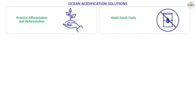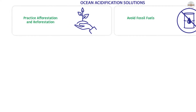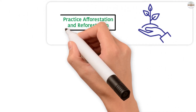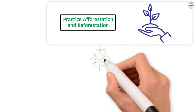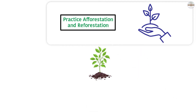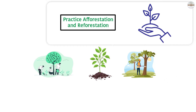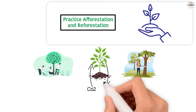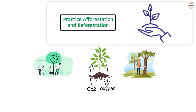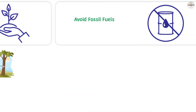Ocean acidification solutions: the best way to stop ocean acidification is to cut back on carbon emissions. Several things can be done to cut down on the amount of CO2 in the air. Practicing afforestation and reforestation is one solution — afforestation is when trees are planted in places where there were none before, while reforestation is when new trees are planted to replace trees that have been cut down. During photosynthesis, trees take in CO2 and turn it into oxygen, which can make a big difference in the amount of carbon dioxide in the air.